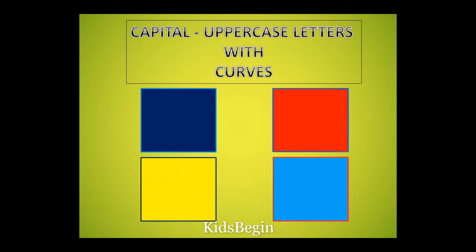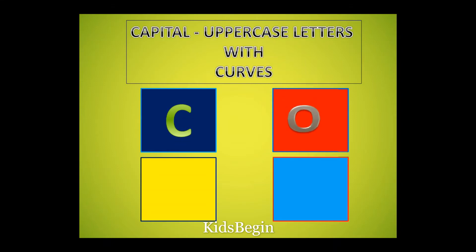Now we will find out the capital uppercase letters that are made of only curves or curved lines. Let's see: C, O, S, and U.